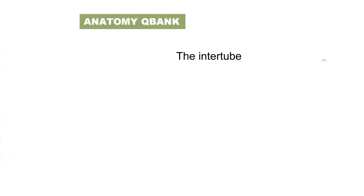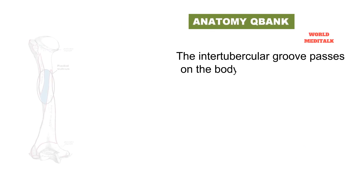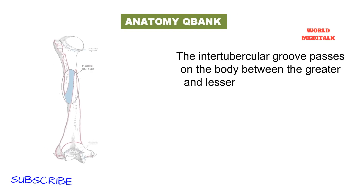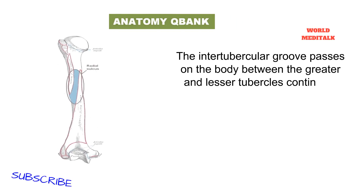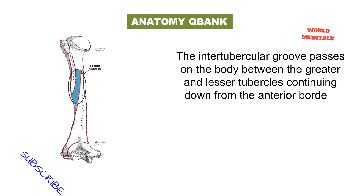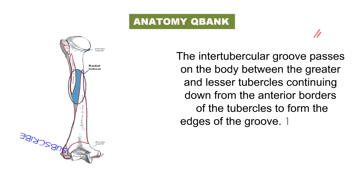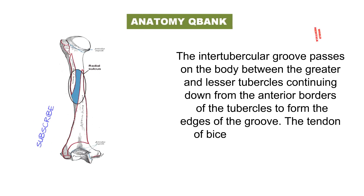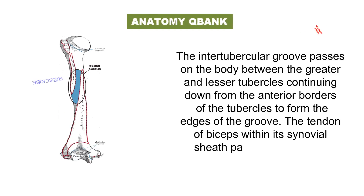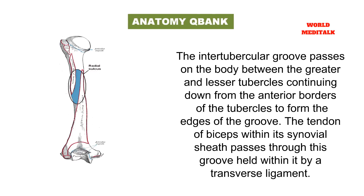The intertubercular groove passes on the body between the greater and lesser tubercle, continuing down from the anterior border of the tubercle to form the edge of the groove. The tendon of biceps, within a synovial sheath, passes through this groove, held within it by a transverse ligament.